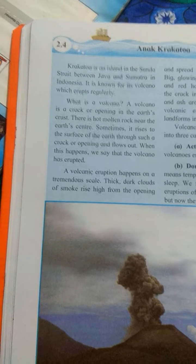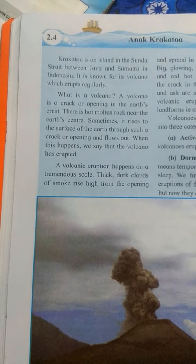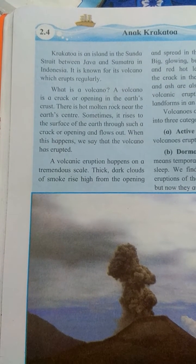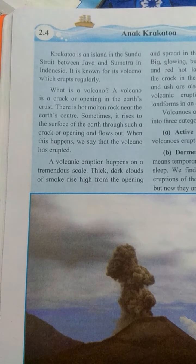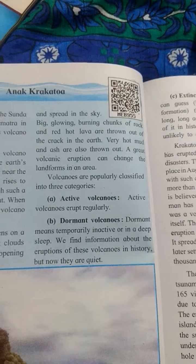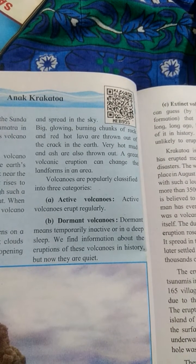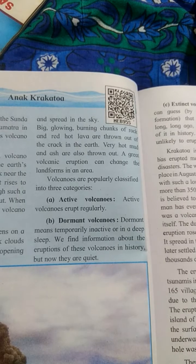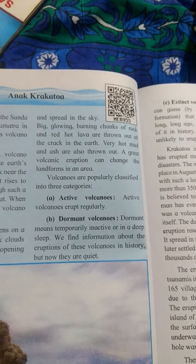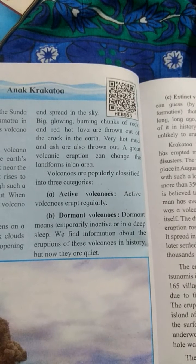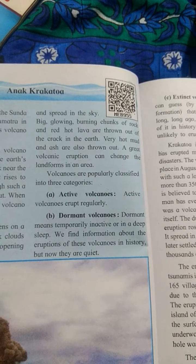You can see the picture of the volcano. A volcano eruption happens on a tremendous scale. Dark clouds of smoke rise high from the opening and spread in the sky. Big glowing burning chunks of rock and red hot lava are thrown out of the crack in the earth. Very hot mud and ash are also thrown out.